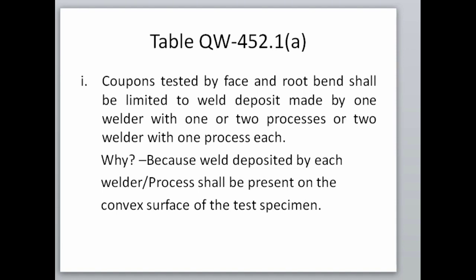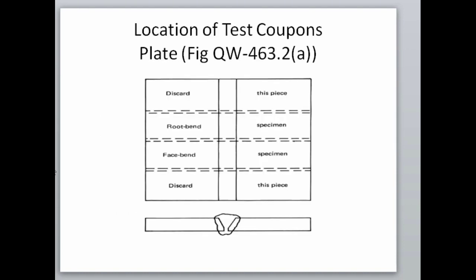Next is how to find the dimension of the test coupon for both plate and pipe in order to qualify the welder. The coupon refers to the entire plate or pipe on which the welder welds, whereas the specimen is the cutout piece of the coupon used to perform a particular test — in our case, the bend test. The location of the bend specimen for plate coupon is given in figure QW463.2A. Unlike AWS, ASME doesn't specify the dimension of the test coupon for performance qualification; ASME only specifies that the dimension shall be sufficient to provide the required specimen, as given in QW211.